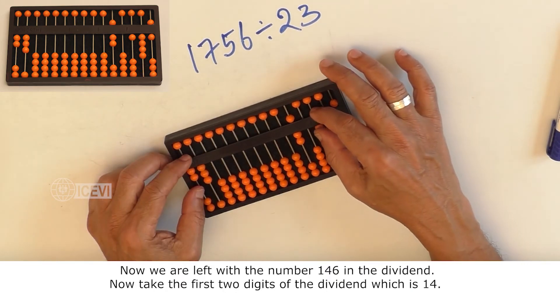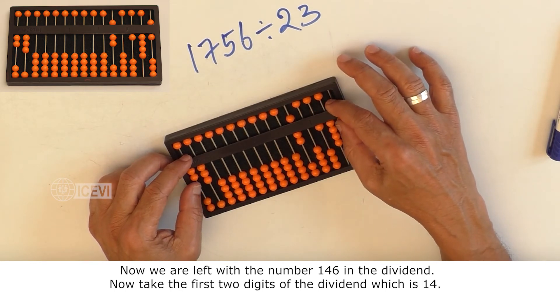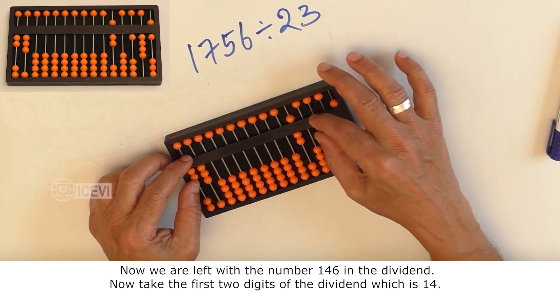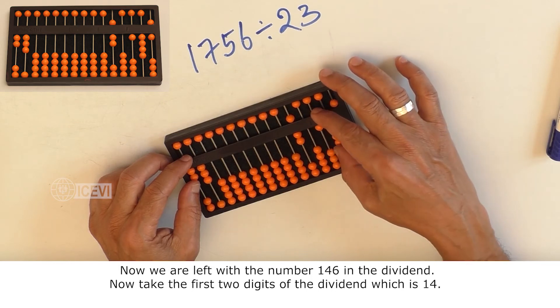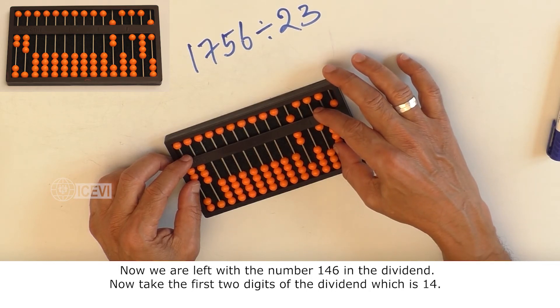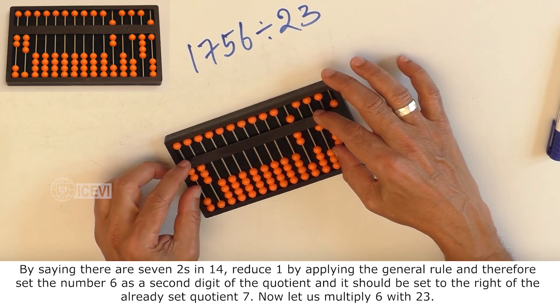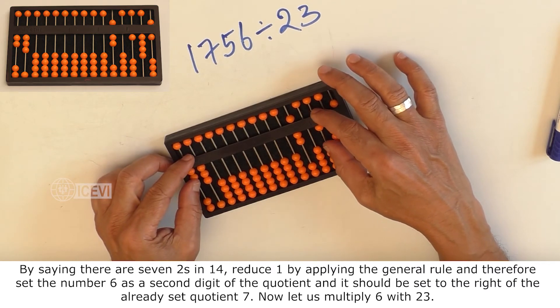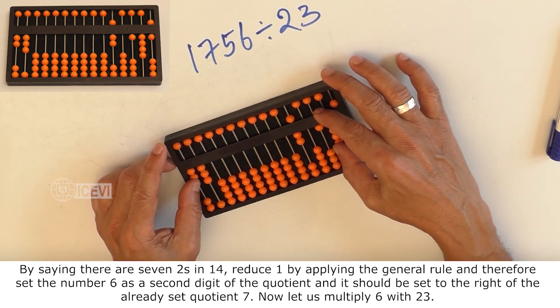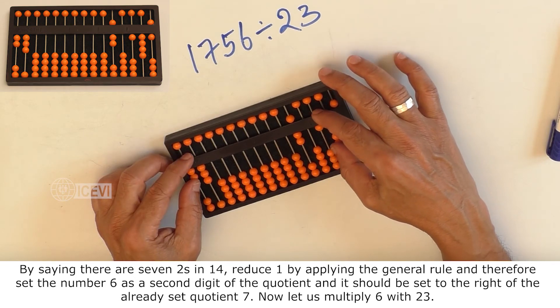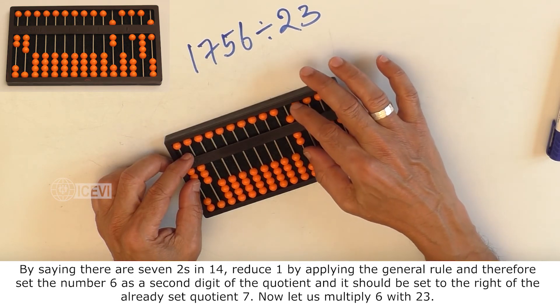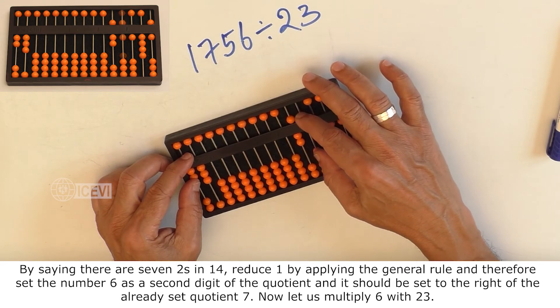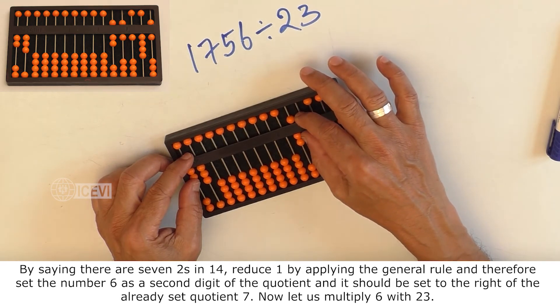Now we are left with the number 146 in the dividend. Now take the first 2 digits of the dividend, which is 14, by saying there are 7 2's in 14, reduce 1 by applying the general rule and therefore set 6 as the second digit of the quotient.